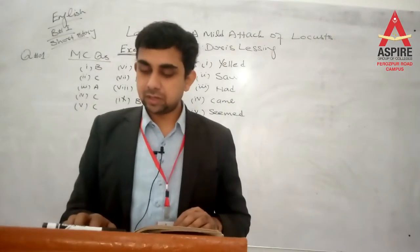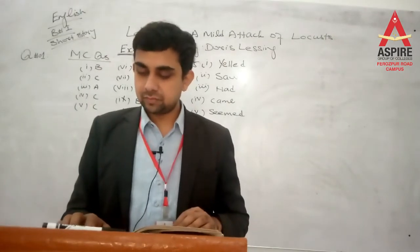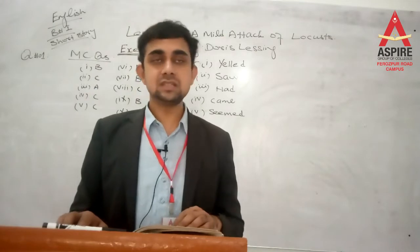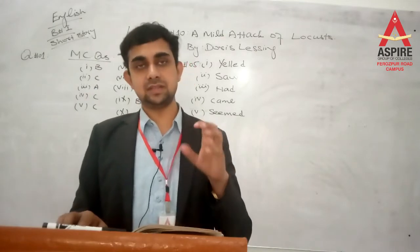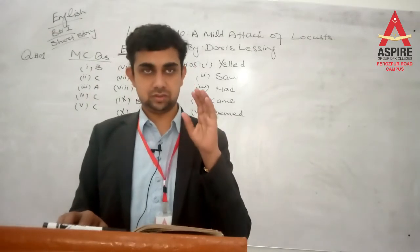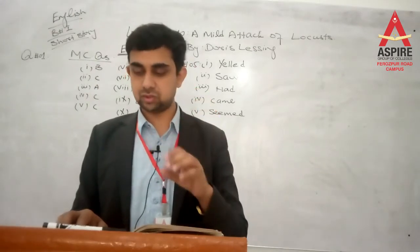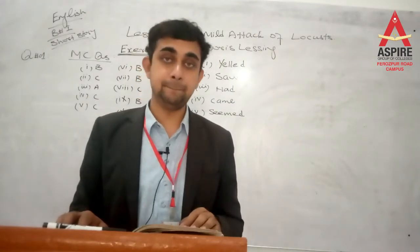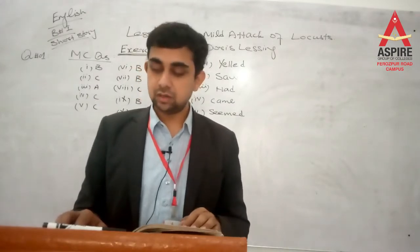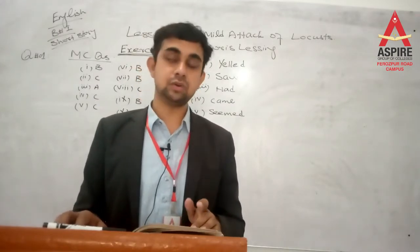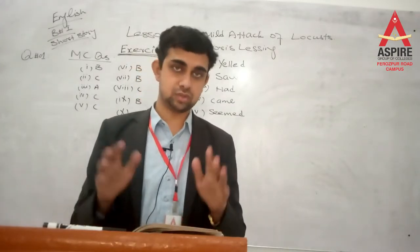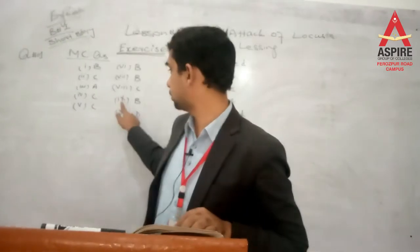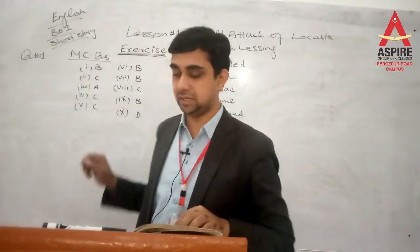Number 9: What made the boughs of trees bend down to the ground? The correct option is B: Locusts — ٹڈیوں کی وجہ سے، ان کے بوجھ کی وجہ سے وہ زمین پر جھک گئی تھیں. So number 9's answer is B.